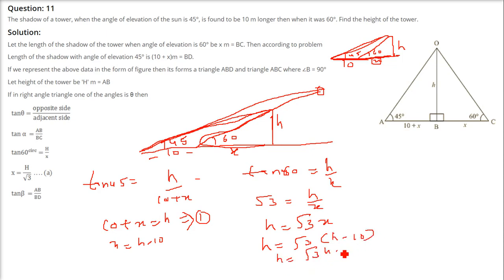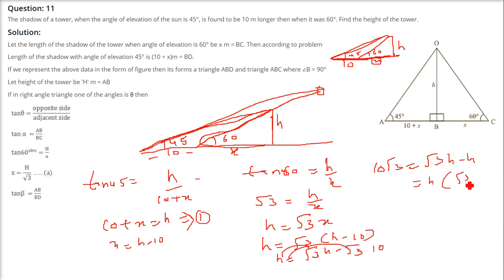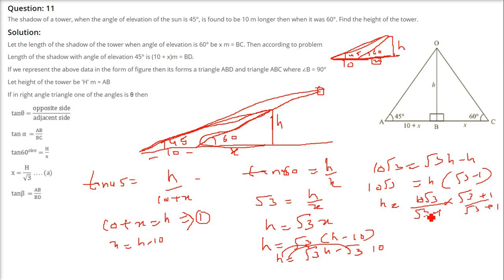Substituting X as H minus 10 into H equals root 3 times X, we get H equals root 3 times H minus 10 root 3. Bringing terms together: 10 root 3 equals root 3 H minus H. Taking H outside: H times (root 3 minus 1) equals 10 root 3. So H equals 10 root 3 divided by (root 3 minus 1).